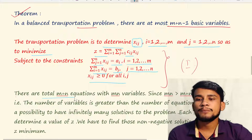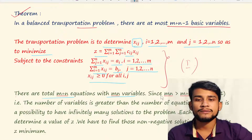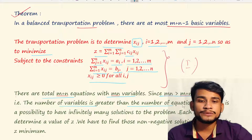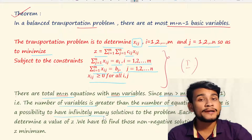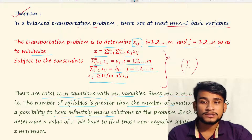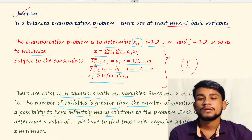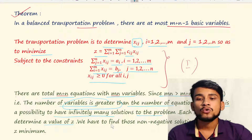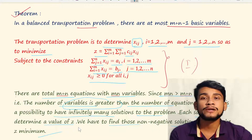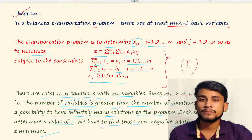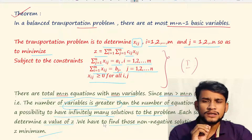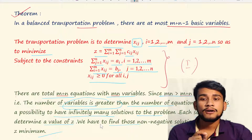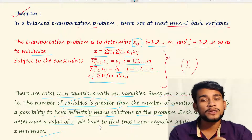There are m + n equations with mn variables. Since mn is greater than m + n for mn > 1, the number of variables is greater than the number of equations, so there is a possibility of infinitely many solutions. We need to find those non-negative solutions which make Z minimum, since in transportation problems the objective is always minimized.